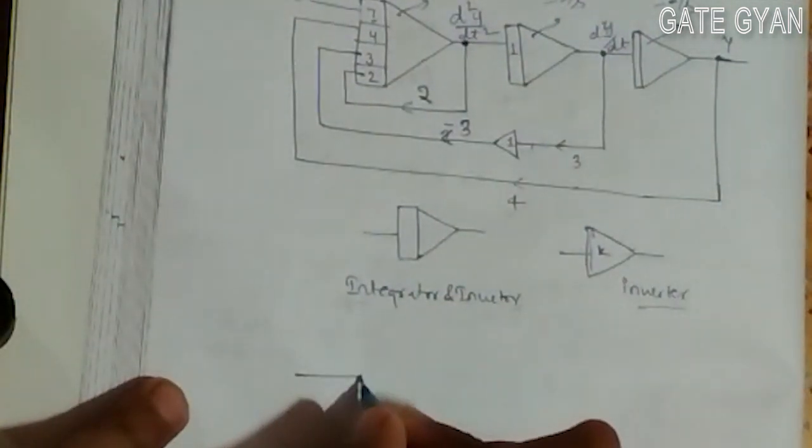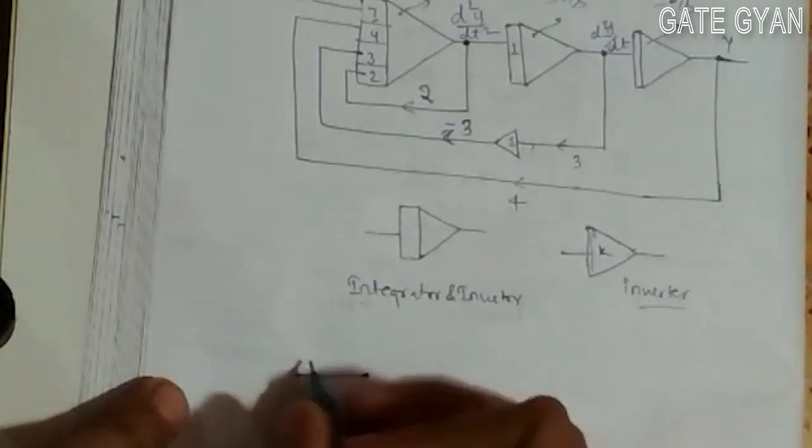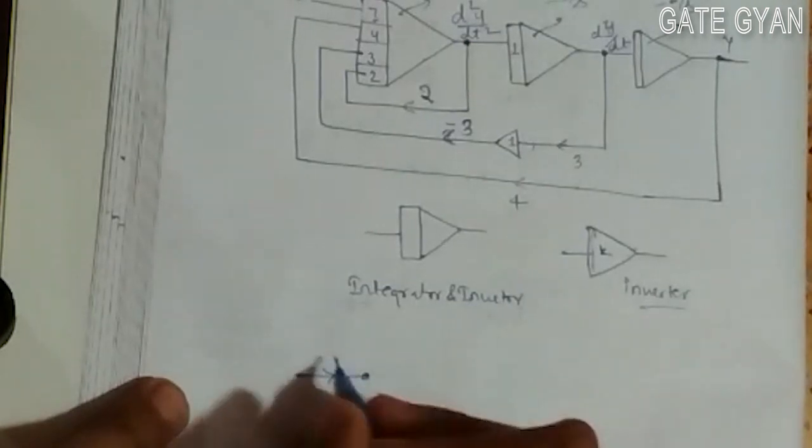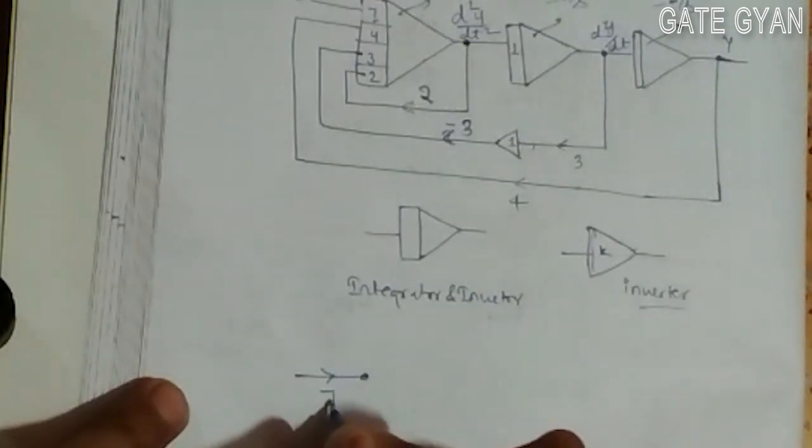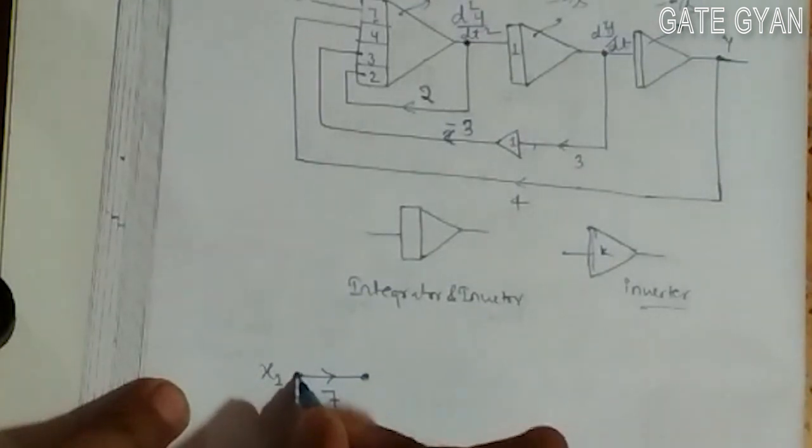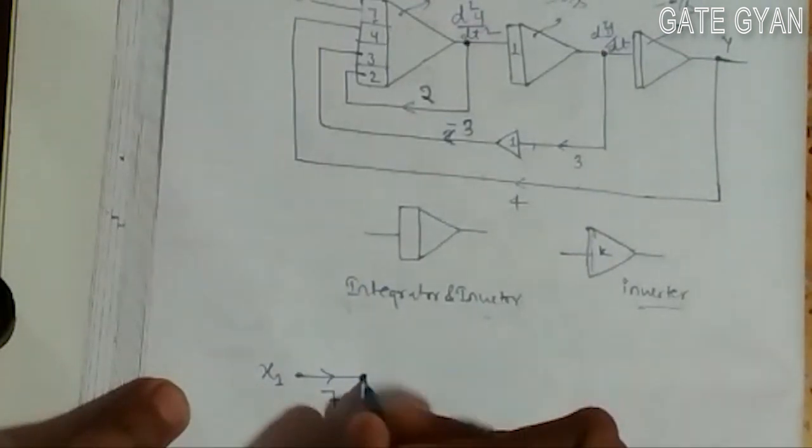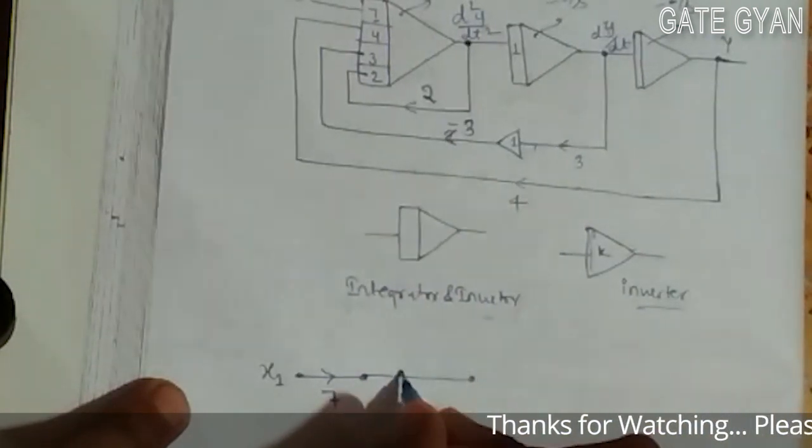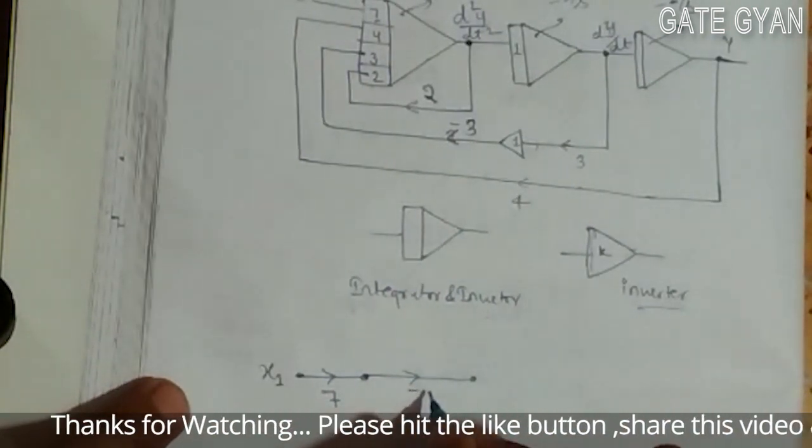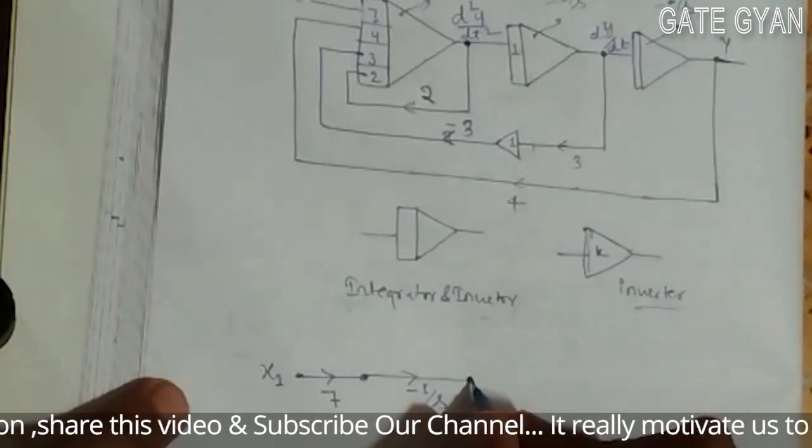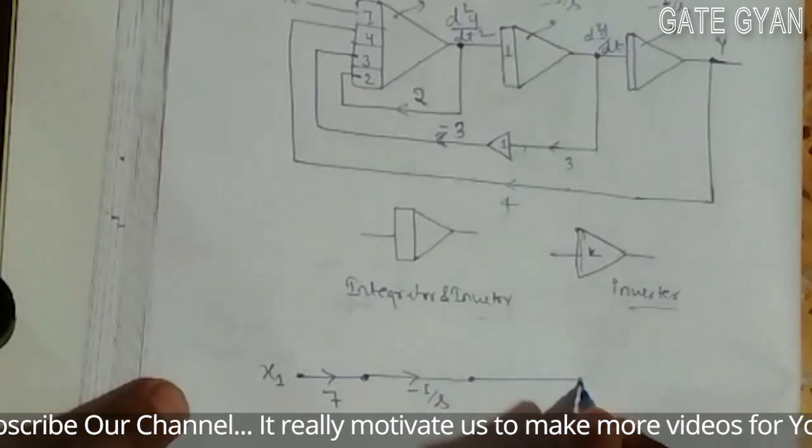I will draw the node points. First one is X₁ or X with a gain of 7. This is my first integrator plus inverter circuit with the value of -1/s.